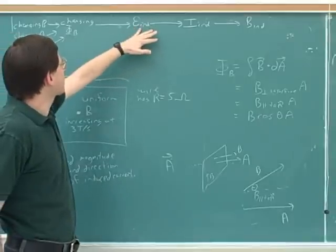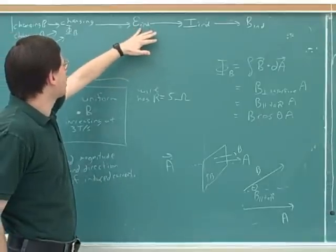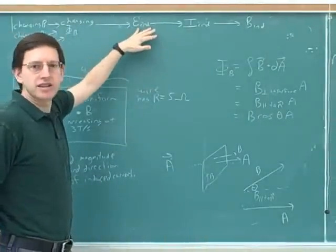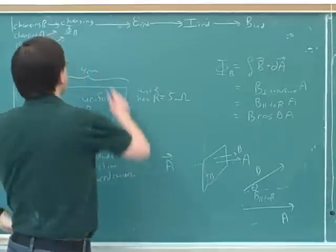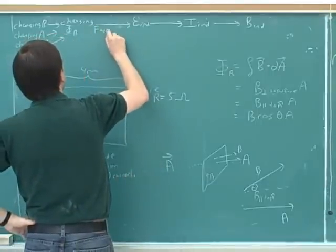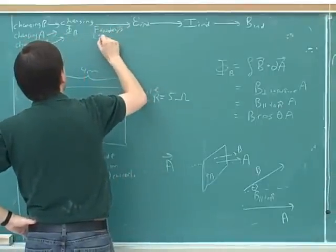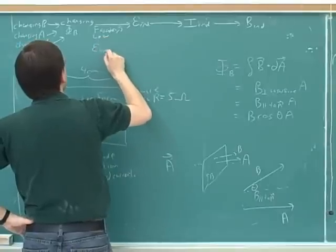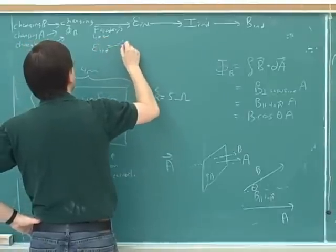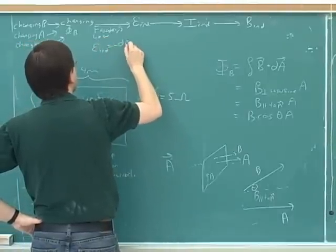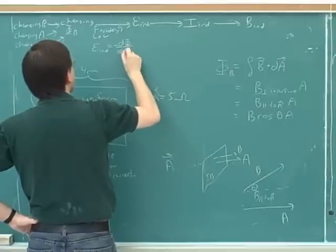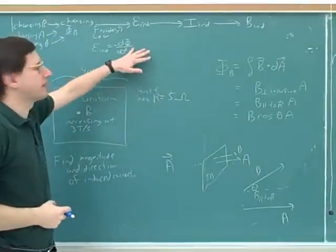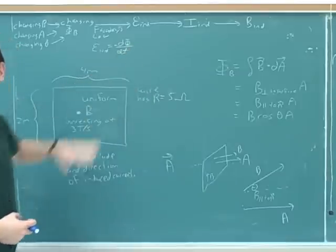How does the change in magnetic flux cause an induced voltage? This is what is called Faraday's law, and it's actually a pretty simple law. It says that the induced voltage is basically the derivative of the flux.